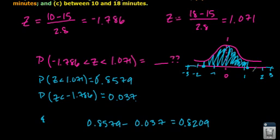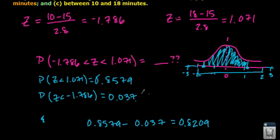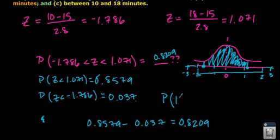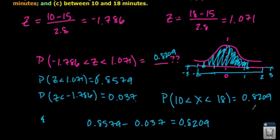Does this make sense? Yes — we know 95% of data falls within two standard deviations of the mean. Here, 82% of the data falls between Z = negative 1.786 and Z = 1.071, which sounds reasonable. So the probability that the wait time is between 10 and 18 minutes is 0.8209, or about 82.9% of the time. And that is an application problem using the normal distribution.